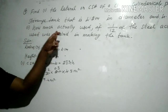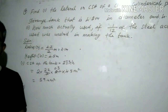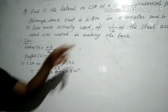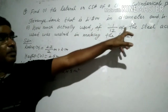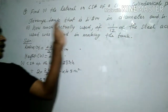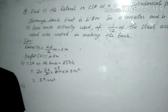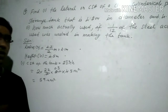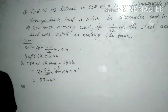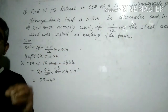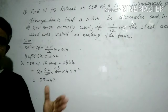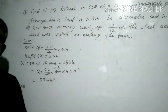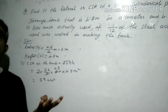Question number two: how much steel was actually used to make the closed cylindrical tank, if one-twelfth of the steel actually used was wasted? Since one-twelfth is wasted, the remaining eleven-twelfths is used in making the tank.